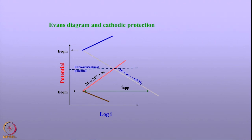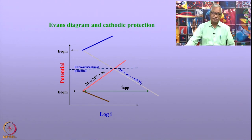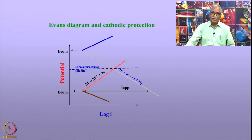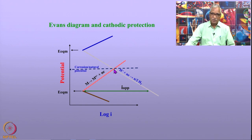We have seen this in the last couple of lectures. The cathodic protection criteria will be discussed in relation to this diagram. When you have a structure buried in an electrolyte or in the soil, it exhibits a potential called the natural potential or corrosion potential. Corresponding to this potential, the metal dissolves at a rate given by the corrosion current density.